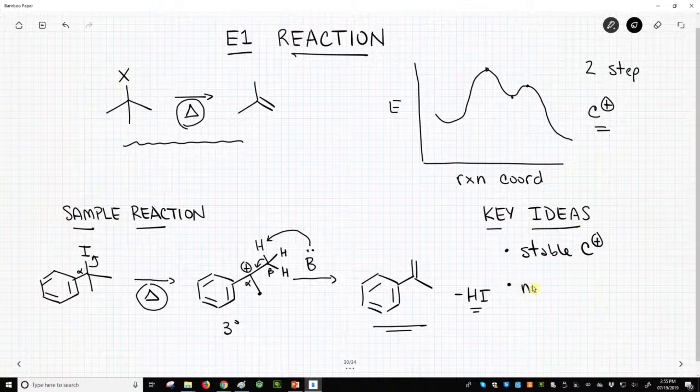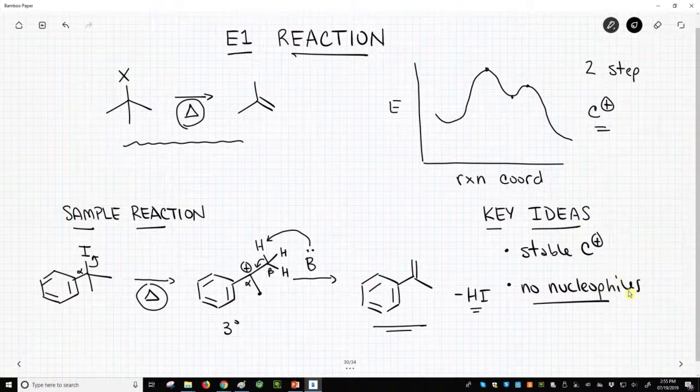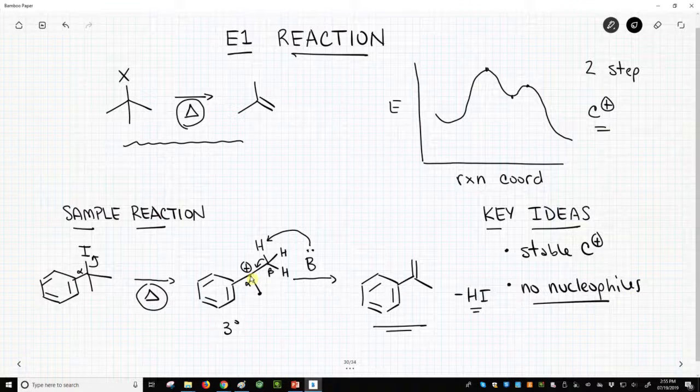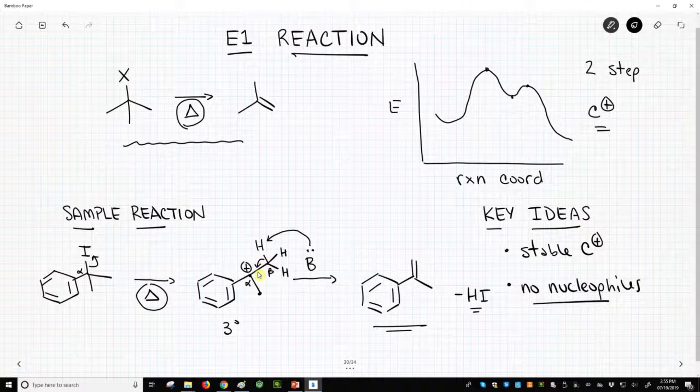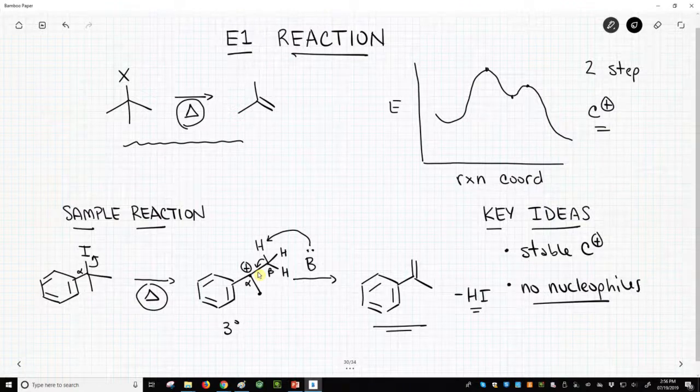The second thing is we need no nucleophiles. If we have a nucleophile present, that nucleophile is going to attack the carbocation just like we saw in the SN1 reaction. So we need to form our carbocation with no nucleophiles around so that we can lose the beta-hydrogen and form the alkene in the E1 reaction.